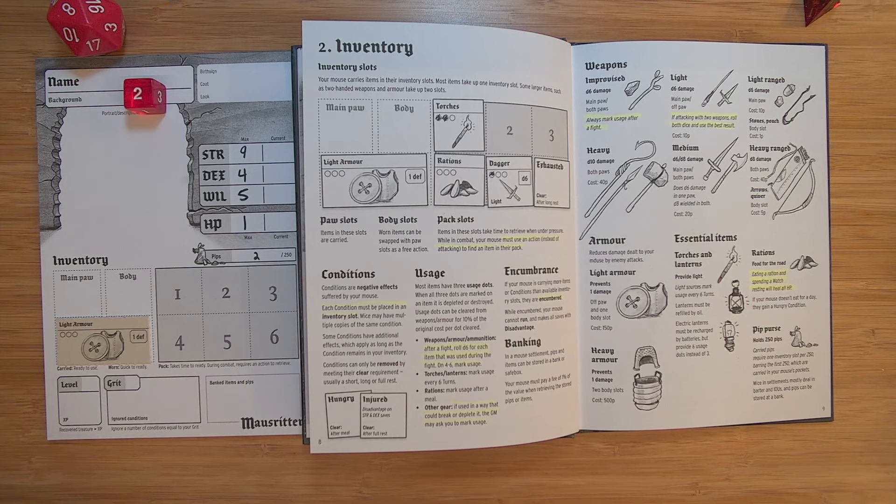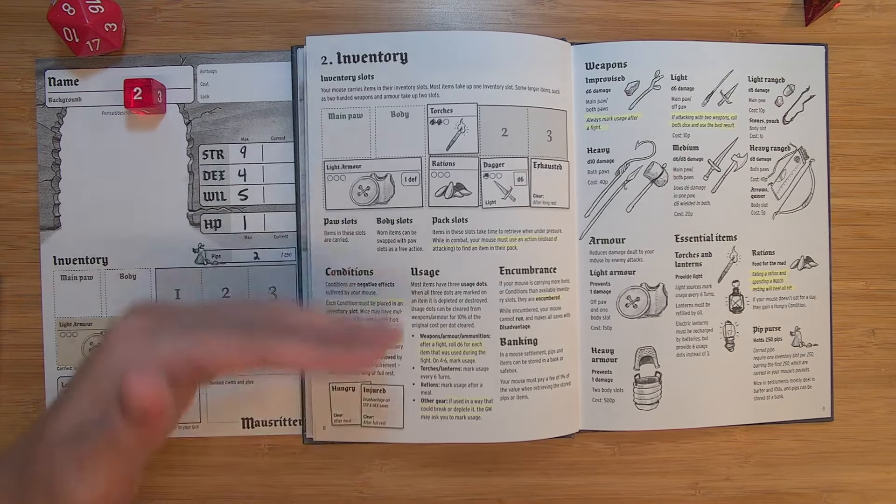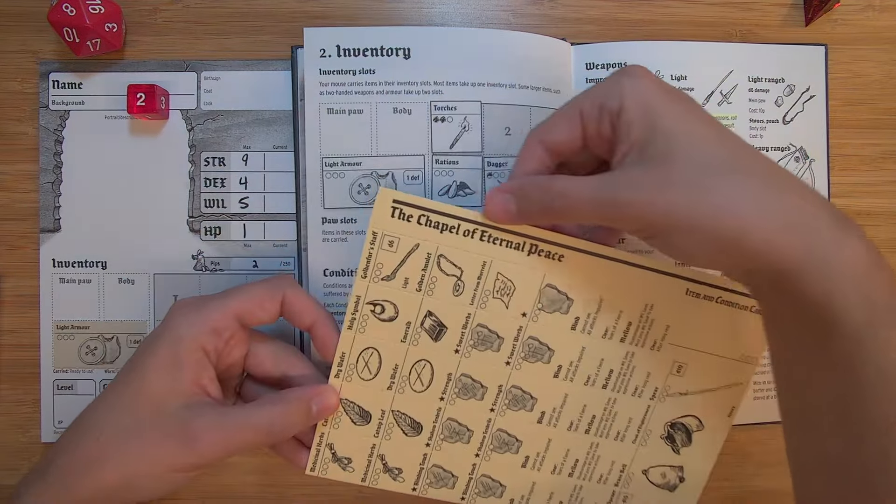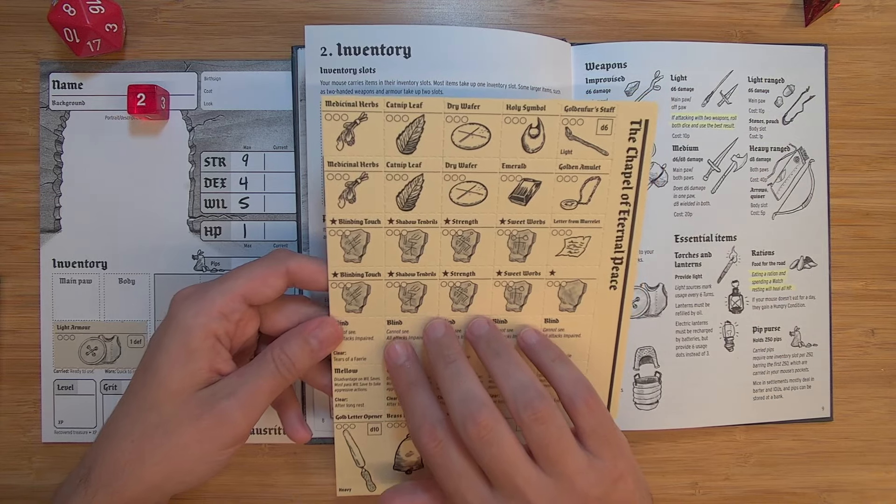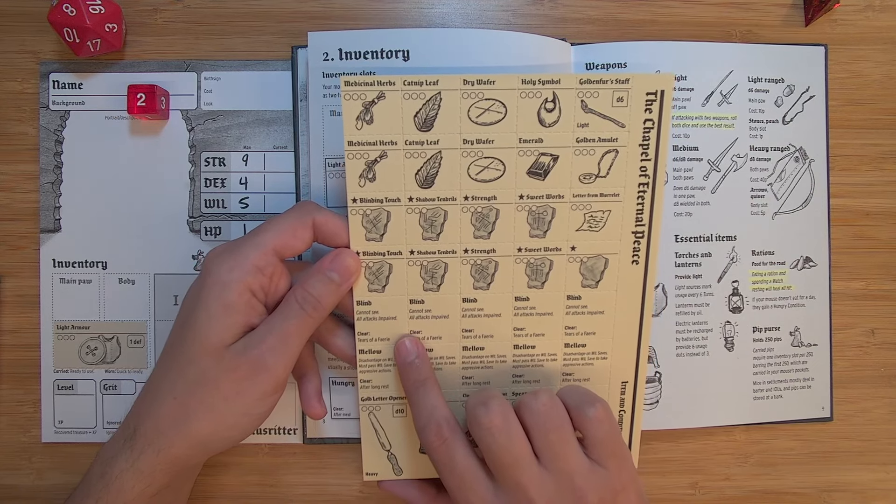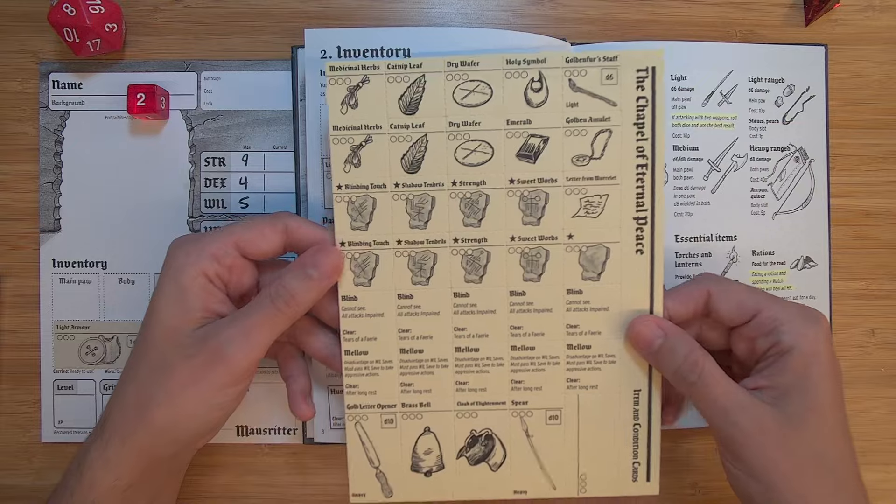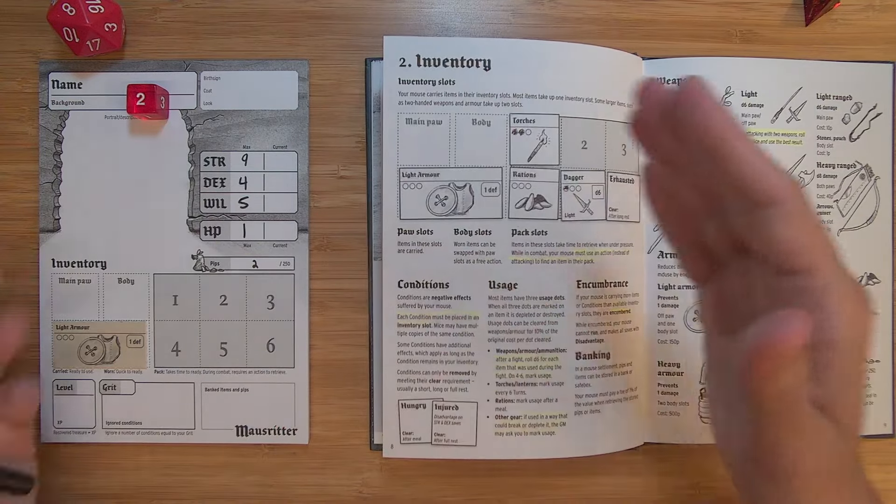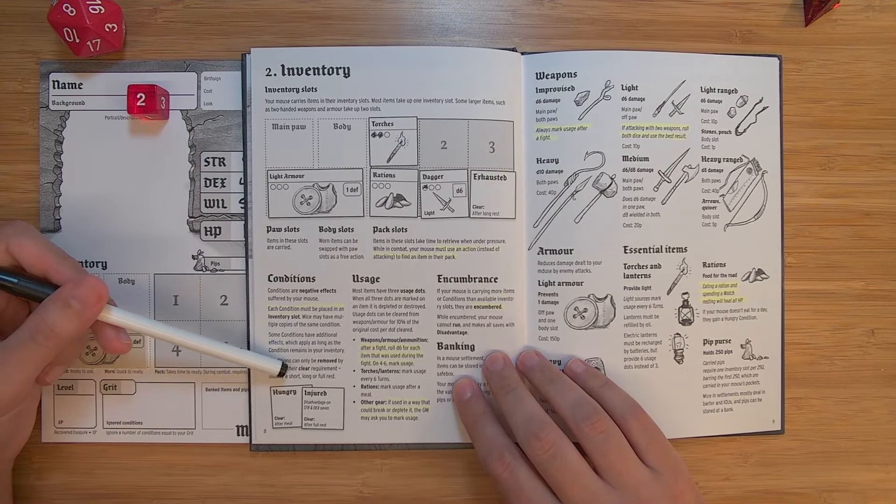So for conditions, each condition must be placed in an inventory slot. And conditions are negative effects that are suffered by your mouse. So rather than like a long list of conditions that you might suffer, each adventure sort of has its own punch card. So this is for the adventure of the Chapel of Eternal Peace. And there's medicinal herbs and catnip and dry wafers. So these are all the cool different things you can potentially obtain in that adventure. But also the conditions are you're blind, cannot see, all attacks are impaired, or if you're familiar with D&D, with disadvantage. Or I believe you roll with a D4 instead of whatever it is. We'll double check on that. So this is blind, you might be mellow instead. So there's different conditions. And as you get conditions, they fill up your inventory slots, which is a really interesting way to handle that.